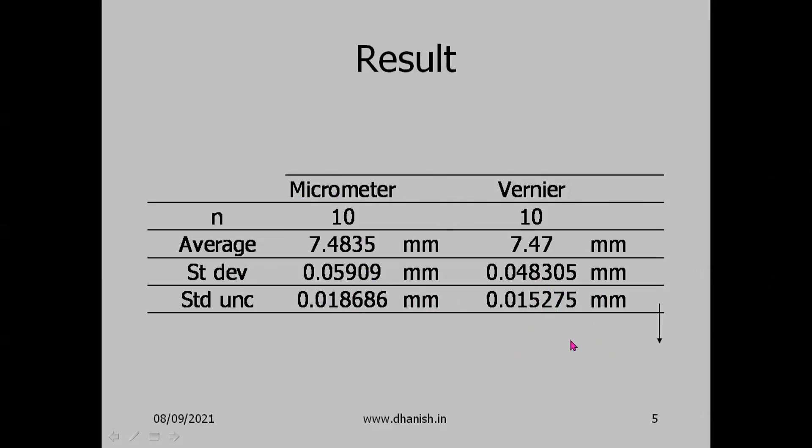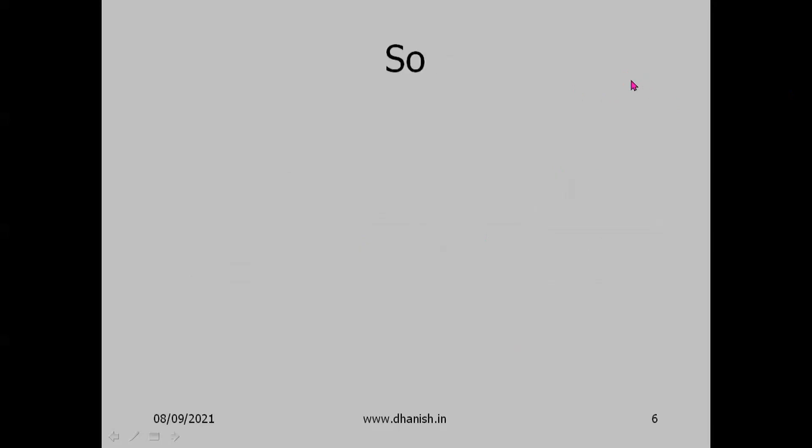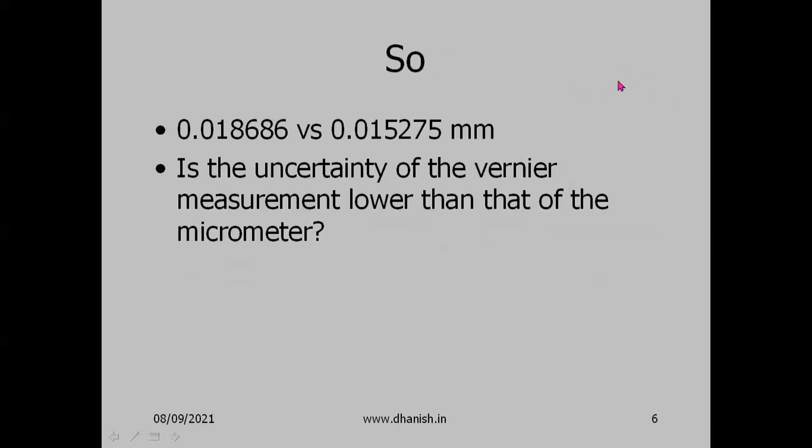Does it mean that uncertainty with vernier is lower? Is the vernier a more accurate instrument? Is the uncertainty of vernier measurement lower than that of the micrometer? What is the reason for this discrepancy in the result?